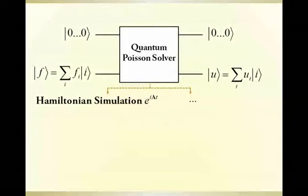An important subroutine of the algorithm is the Hamiltonian simulation of the Poisson matrix. To efficiently implement the simulation, we take advantage of the fact that the Poisson matrix can be diagonalized using sine transform.